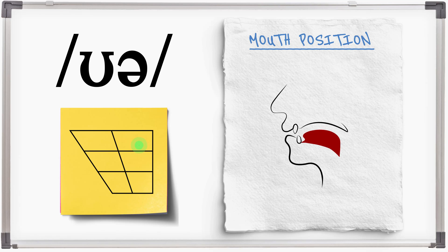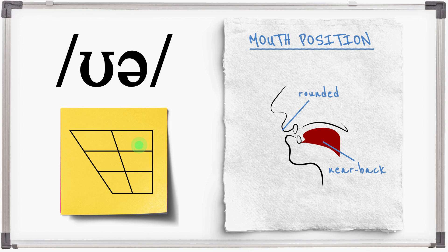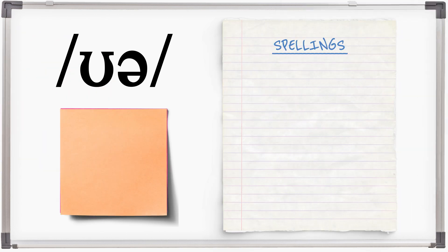Ur is a long vowel sound that is pronounced with the tongue slightly back, the lips rounded, and the jaw close mid. Ur is always spelt with vowels and R.